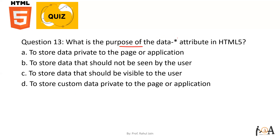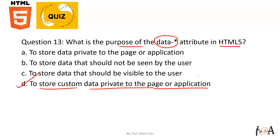Question number thirteen: what is the purpose of the data-* attribute in HTML5? It is used for storing custom data private to the page or application — data that should not be seen directly by the user. Option D is the correct answer: to store custom data private to the page or application.